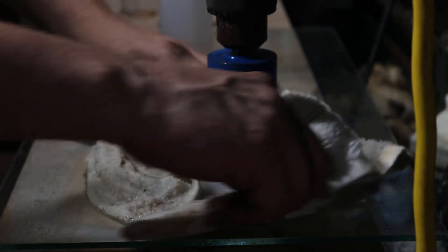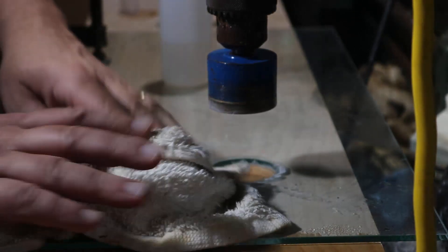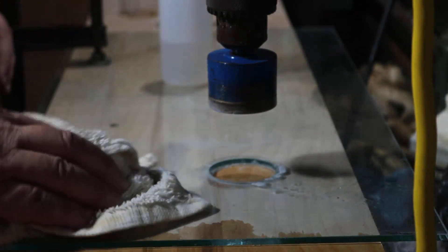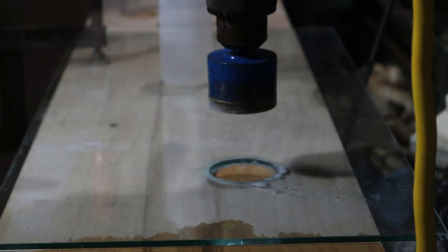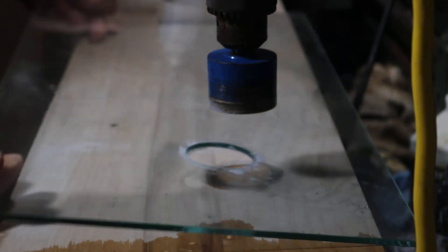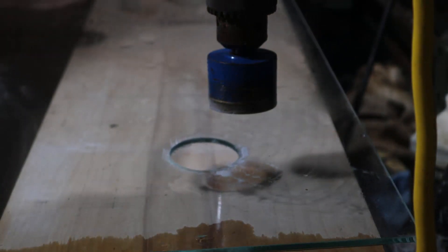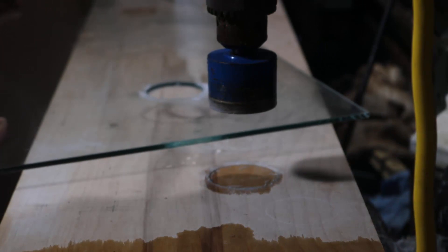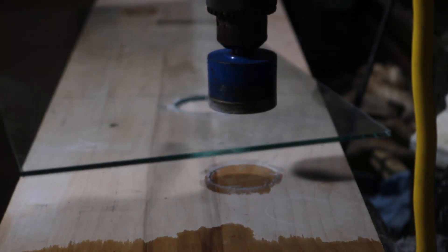And the hardest part of course is when you're breaking through the other side to prevent shelling. A lot of people I watched do freehand drilling for other tanks and you know, some horrible shelling on the inside. And that's the advantage of doing it this way. With a new bit of course. Now old bits, you're going to get a bunch of shelling.